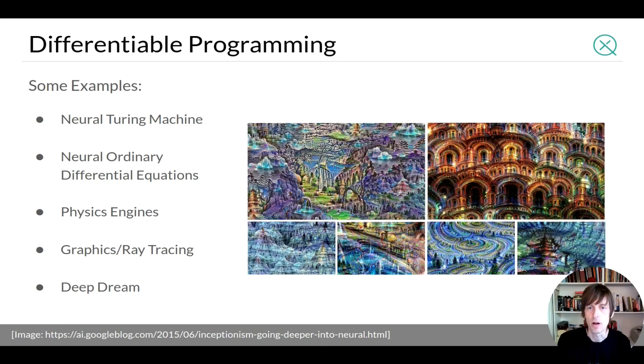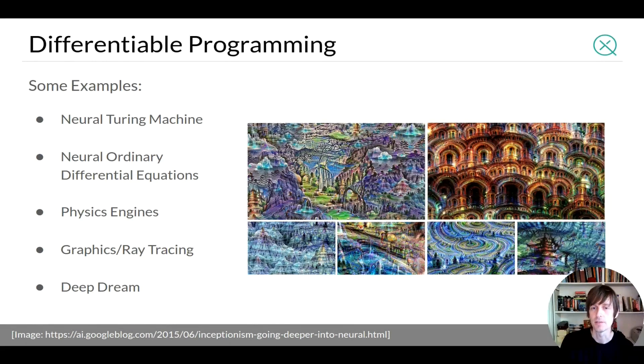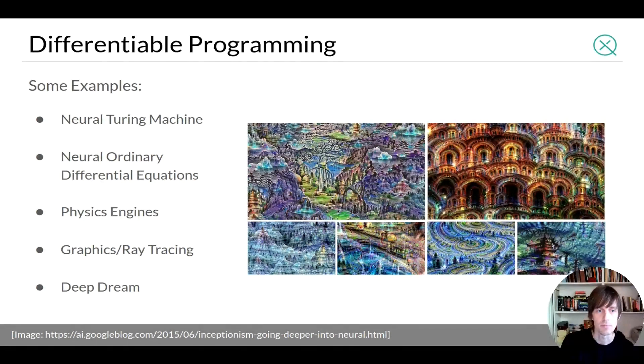Differentiable programming is quite broad. There's a lot of ideas now starting to emerge that are maybe less aligned as deep learning and more aligned as differentiable programming. So I just list a few here. Neural Turing machine this is basically a neural network type model that has access to an external memory. There is neural ordinary differential equations where you're not optimizing a neural network but you're optimizing a solver to a differential equation. Other things like physics or graphic engines.